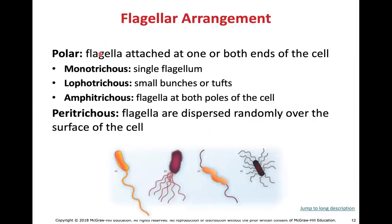Flagella arrangements can be monotrichous — a single flagellum; lophotrichous — a bunch of flagella coming off at a single point of origin; amphitrichous — flagella on either side of the cell; and peritrichous — flagella at multiple points of origin around the cell. This gives polarity to these cells, and a bacterium with peritrichous flagella might rotate in a tumbleweed fashion.